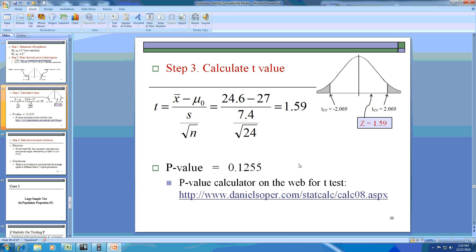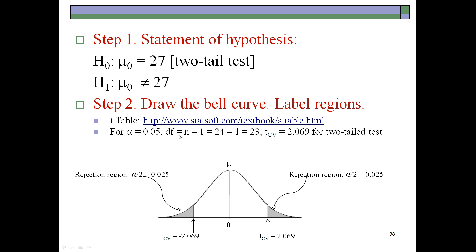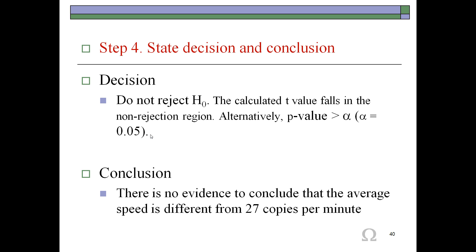Because 0.1255 is greater than the 5% level of significance that we are testing with, we cannot reject the null hypothesis. You could say you accept H0, although it's better to say you cannot reject the null hypothesis. The conclusion here is that there is no evidence that the average speed is different from 27 copies per minute.